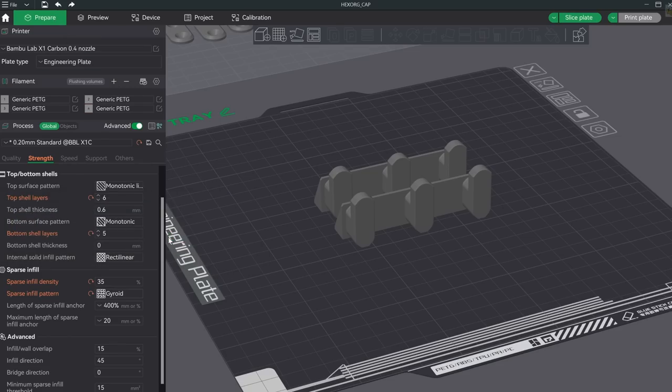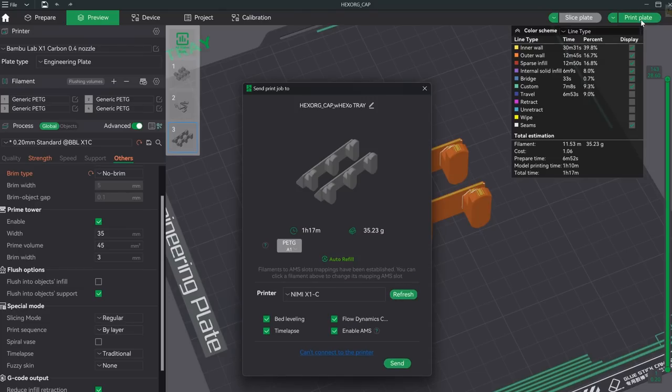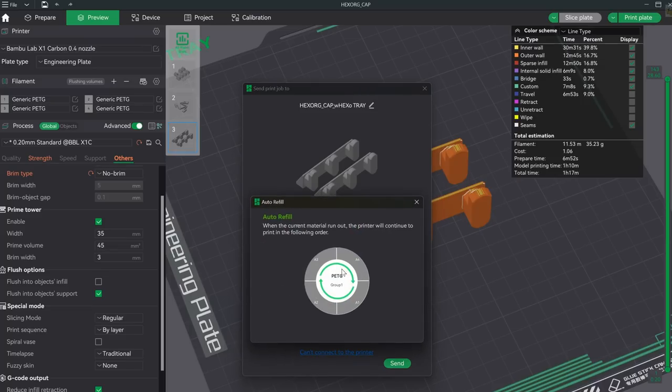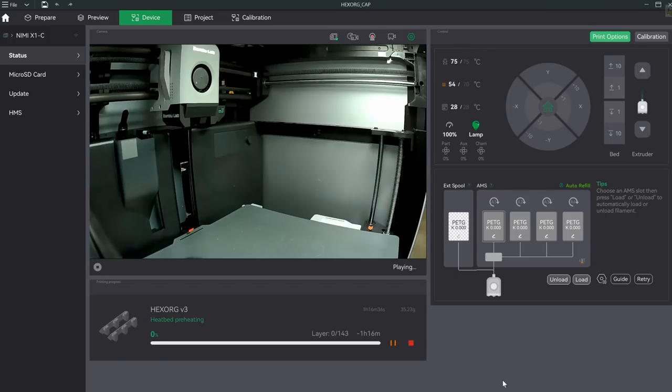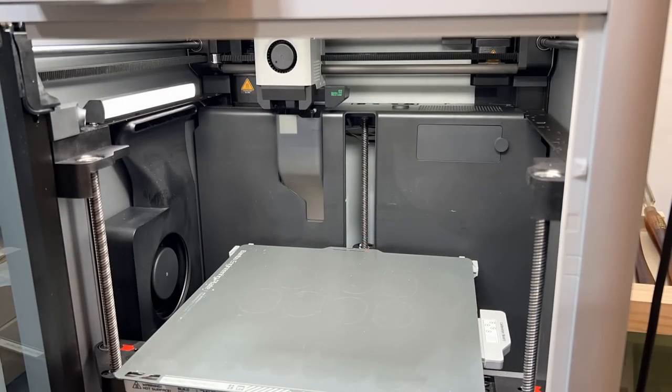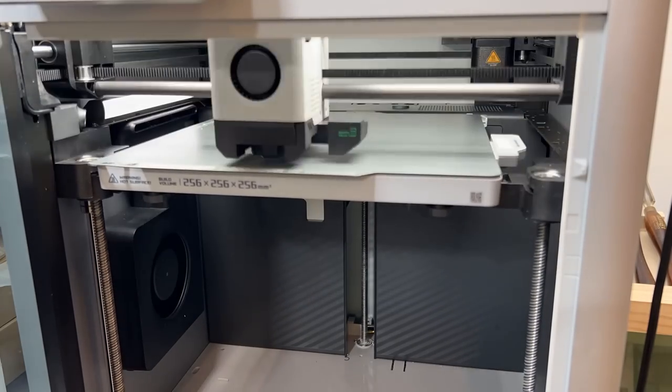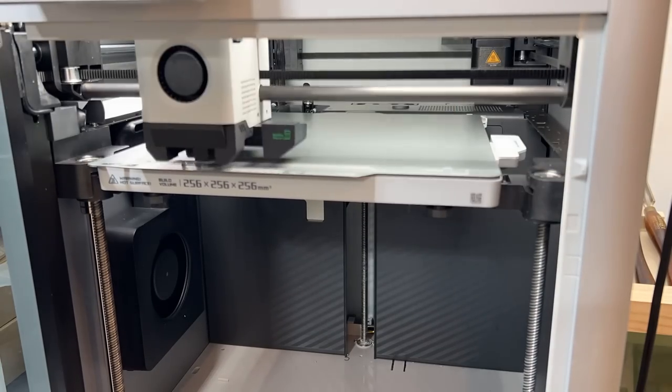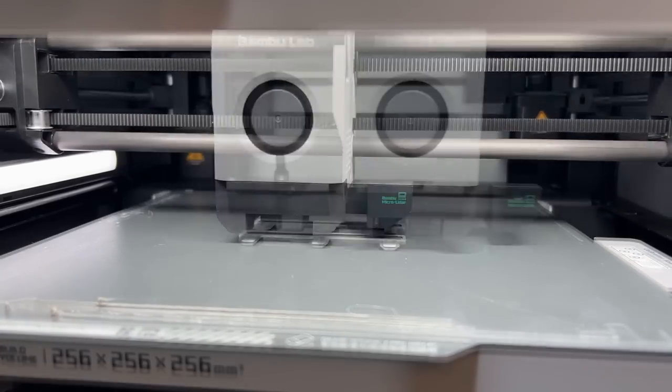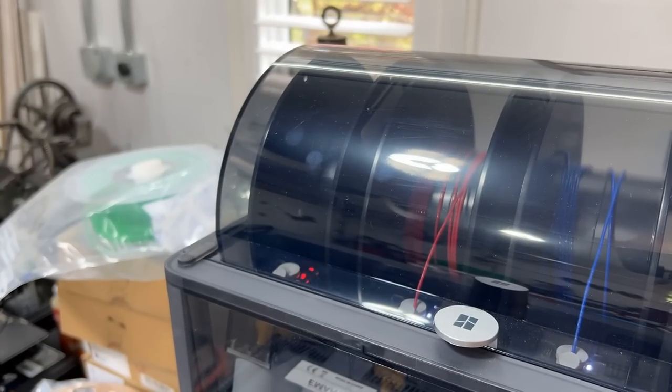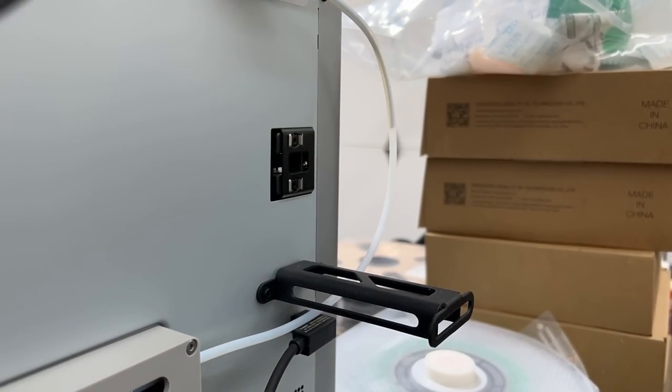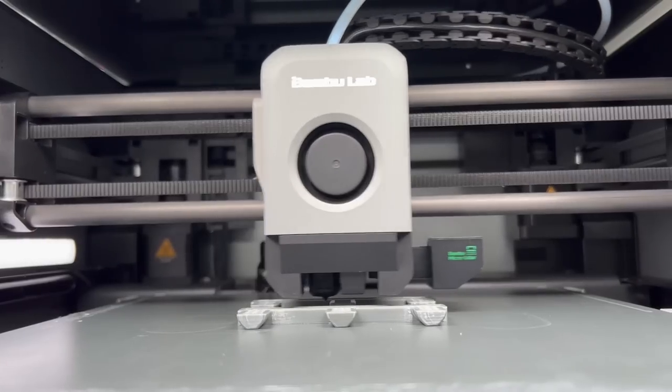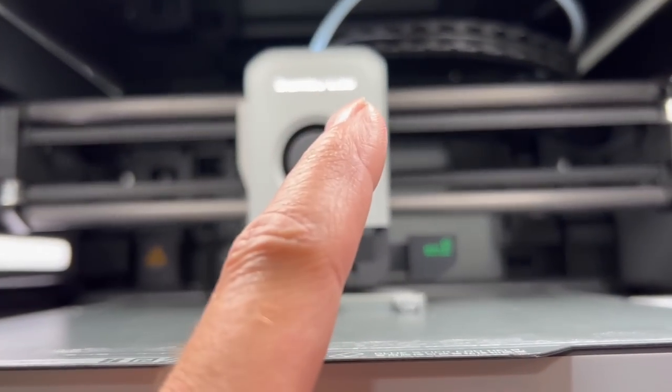All right, so now in Bamboo Studio I need to sync with the printer to make sure that all the colors are aligned properly with what I just set up. All right! Nice-looking! It should be really close to the point where it's going to switch to the red filament.